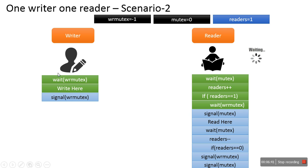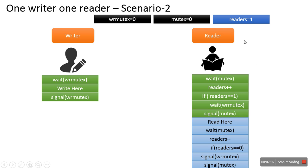Now focusing on the writer code: the writer finishes its writing operation and executes signal(wr_mutex), which increases the value of this semaphore to 0. As soon as this value becomes non-negative, the reader also starts executing its instruction. The next instruction signals the mutex semaphore, and the reader now starts reading. A reader cannot read the file if it is already being accessed by a writer.